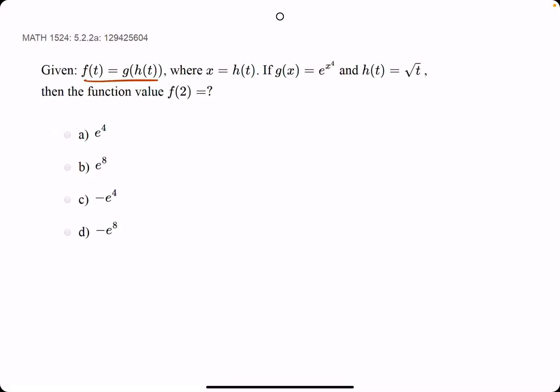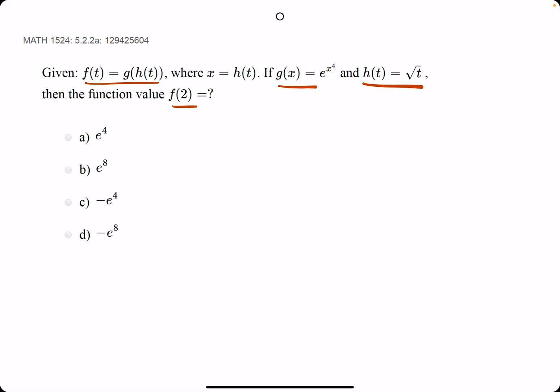In this problem, we are given that f of t is equal to g of h of t, where g is this function, h is this function, and they're asking us to find f of 2.